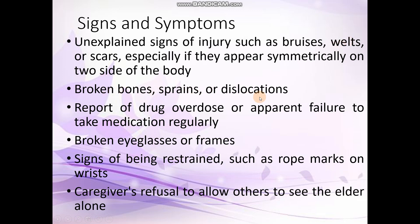Additional signs include broken bones, sprains or dislocations, and reports of drug overdose or apparent failure to take medication regularly. Another sign is when someone visits the elderly person but the caregiver does not allow people to see them — that indicates something abnormal, something suspicious.